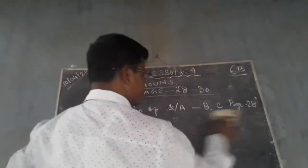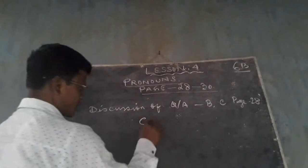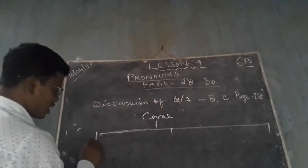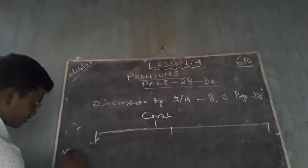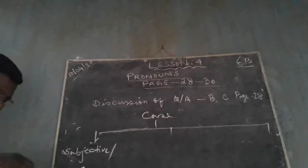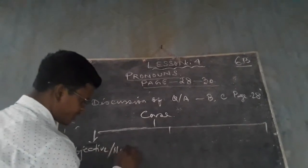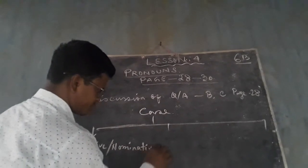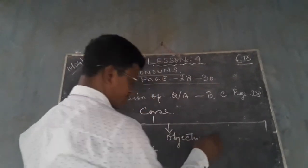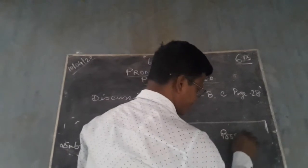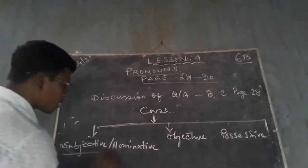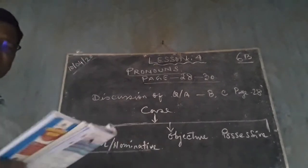In the third sentence, 'mine' shows possession. When a pronoun shows possession, it is the possessive case. So case is divided into three: the first one is subjective or nominative case, the second one is objective case, and the third one is possessive case.